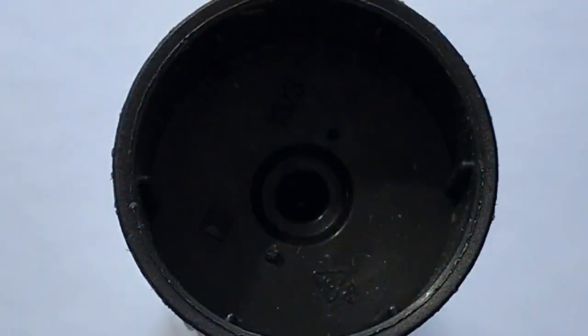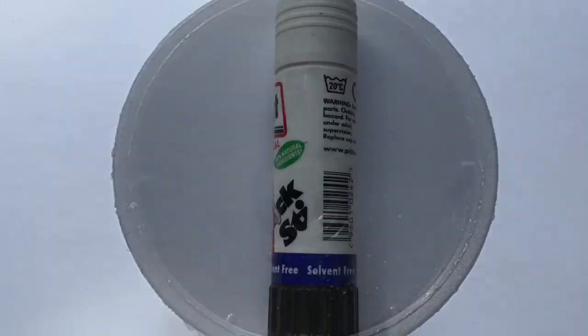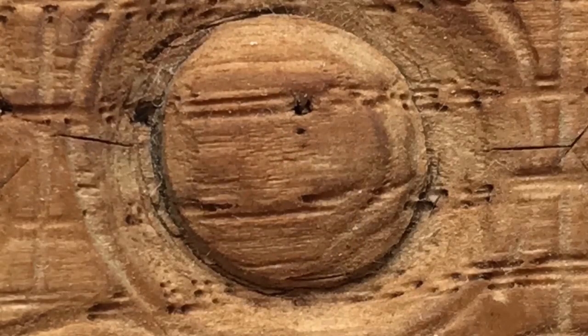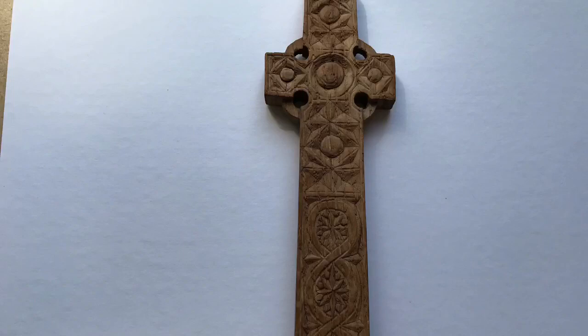Now. This one's very strange. It's very hard to identify what this is. It's the bottom of something. Stop the video. Were you right? It's a glue stick. Now. This one. It's made of wood. It's got some patterns carved in it. Stop the video. Were you right? Yes. It's the cross that we saw on Palm Sunday.